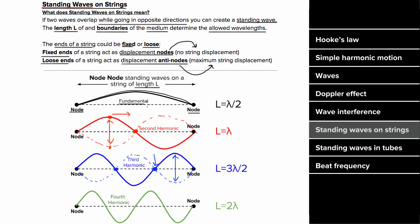The fundamental standing wave is the largest possible wavelength, which in a node-node configuration is one half of a wavelength, so the length of the medium equals half the wavelength. The second harmonic is one full wavelength, so the length equals one wavelength. The third harmonic is three halves of a wavelength. There's no limit — you can keep going. To excite higher standing waves, you must keep increasing the frequency, since you keep decreasing the wavelength.